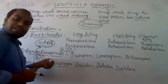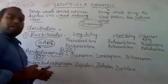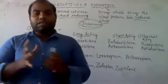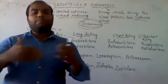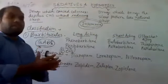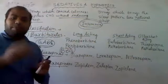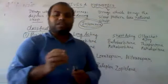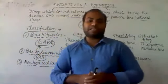The benzodiazepine receptor works by binding to the GABA-A receptor and enhancing its effect. It increases the frequency of chloride channel opening. In this way, benzodiazepines increase the frequency of chloride channel opening, which leads to hyperpolarization — similar to barbiturates but through a different mechanism.